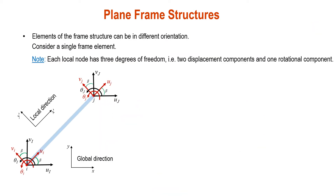However, elements of the frame structure can be in different orientations. If we take one single frame element, we know that at each local node we have 3 degrees of freedom: two displacement components, U and V, and one rotational component, theta. At node I, we have displacement in the axial direction, UI, and VI in the local direction perpendicular to the beam, along with rotation theta_I in the Z direction.